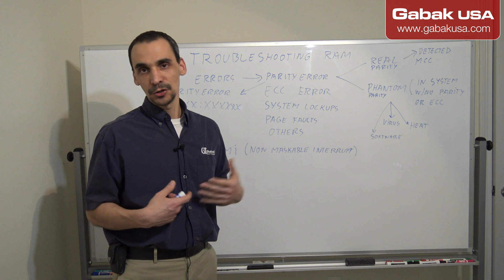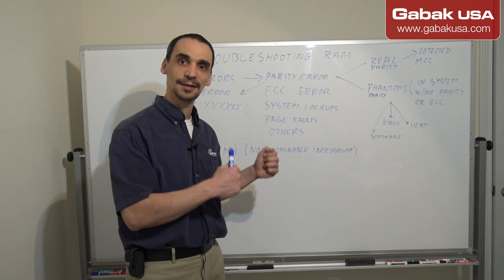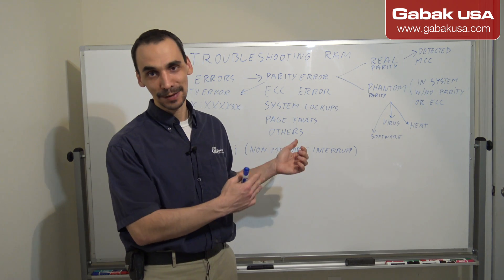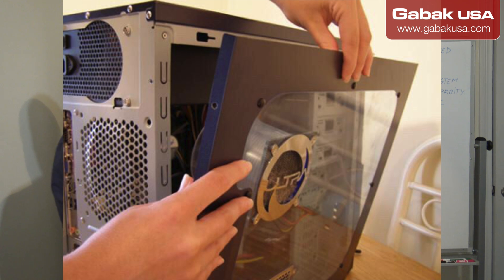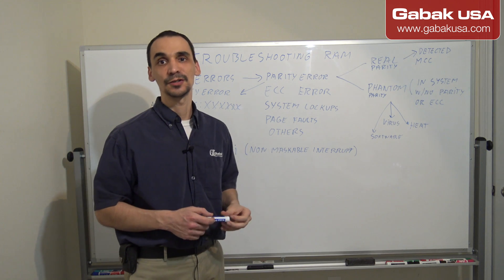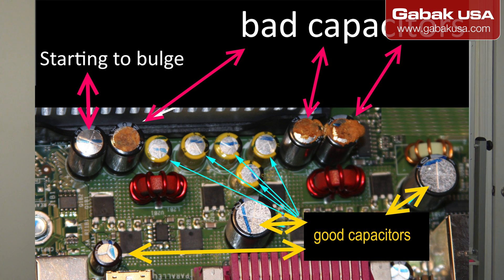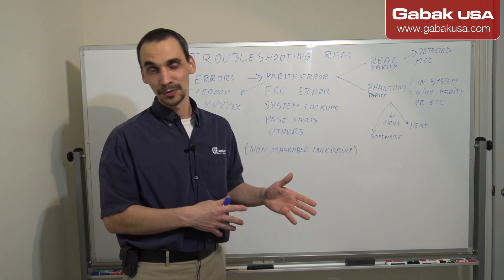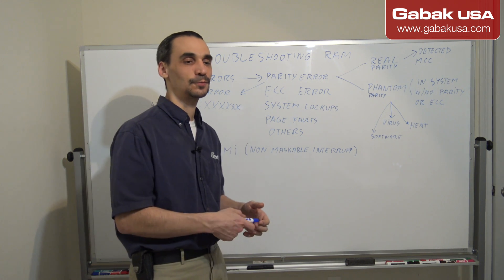Another thing I recommend is checking the motherboard. The first thing I do when fixing a computer is remove the side panel, clean out all the dust, and inspect all the capacitors. If the capacitors look good, great. If the motherboard has a few bad capacitors, I recommend replacing the whole motherboard — try to get the same model so you don't have to reinstall Windows.